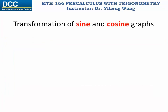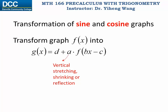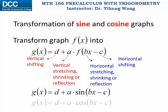We have already learned the general rules to transform the graph of one function into another. Here g(x) is related to f(x) through the real non-zero coefficients a, b, c, and d. Coefficient a corresponds to vertical stretching, shrinking, or reflection. B corresponds to horizontal stretching, shrinking, or reflection. C corresponds to horizontal shifting, and d corresponds to vertical shifting. We'll apply these rules to sketch sine and cosine functions.